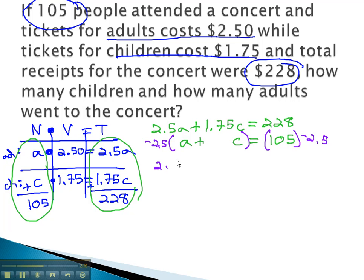The first equation, then, is 2.5A plus 1.75C equals 228. That one hasn't changed, but when we multiply by negative 2.5, we get negative 2.5A minus 2.5C equals negative 262.5.